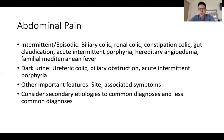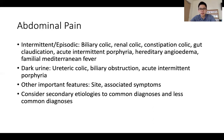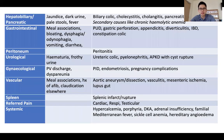If there is associated dark urine, then differentials to think about could be hematuria from ureteric colic, biliary obstruction due to increased bilirubin in the urine, as well as acute intermittent porphyria where there is heme deposition in the urine. Other important features would be the site of pain as well as associated symptoms.